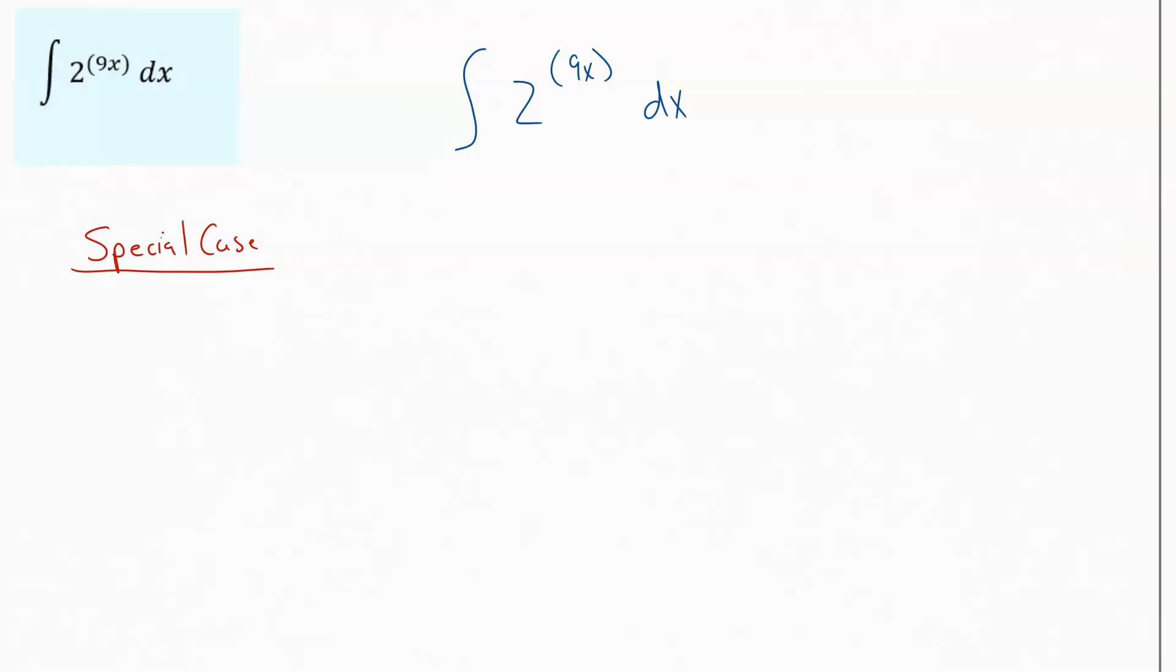We saw that with derivatives when we were memorizing the derivative of sine, cosine, tangent, all those derivatives. Everything you had to memorize as a special case derivative, guess what? You're going to need to memorize it going the other direction. And that's what we're looking at here.